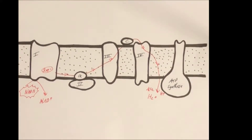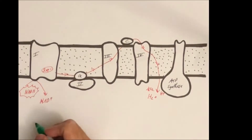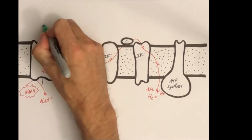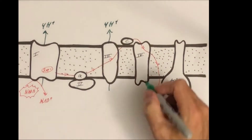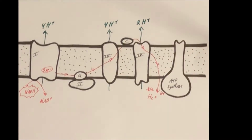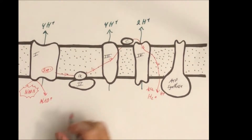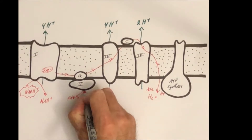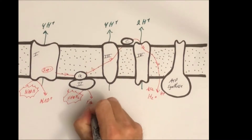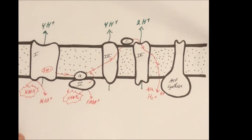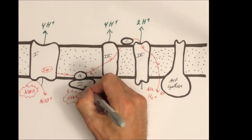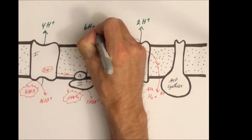Each time an NADH molecule is broken down through oxidative phosphorylation and the electrons go through the electron transport chain, each complex contributes to pumping protons outside the inner mitochondrial membrane. At complex 1, we get 4 protons pumped out. At complex 3, we get another 4 hydrogens pumped outside. At complex 4, we get 2 hydrogen ions pumped out. At complex 2, our FADH2 molecules break down and also contribute electrons into the electron transport chain.